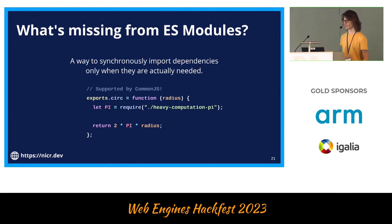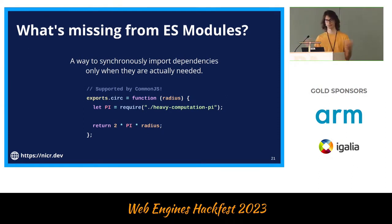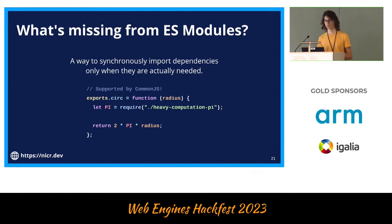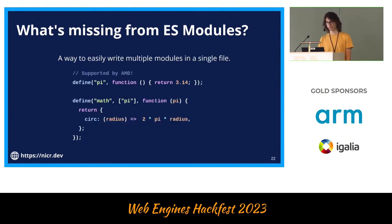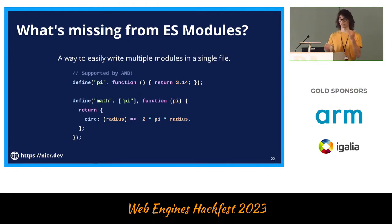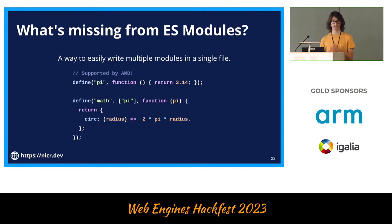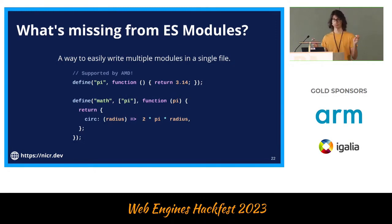An example of something missing from ES Modules that CommonJS provides is a way to synchronously import dependencies not at the beginning — maybe you have a file that is very heavy to import, or you want to defer doing unnecessary work unless it's really necessary. With CommonJS, you can just use the require function wherever you want, such as inside another function, and this heavy computation file will only be loaded if you actually call that function. ES Modules don't let us do anything like this. Another example: AMD supported writing multiple modules in a file, so bundling AMD modules was very easy — mostly just concatenating them. With ESM, we cannot really concatenate all modules in a single file because we have to be careful about scope and how modules interact.